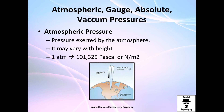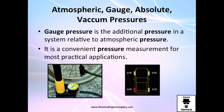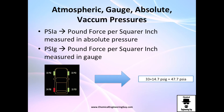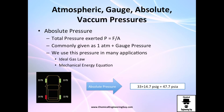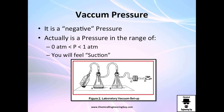To recap: absolute pressure is the sum of all pressures. You could have vacuum pressure plus gauge pressure plus atmospheric pressure, and that gives you the absolute pressure of a system.